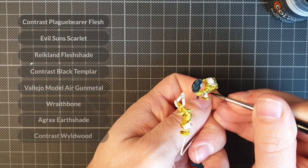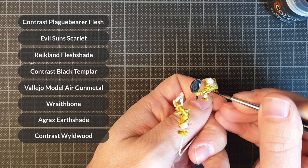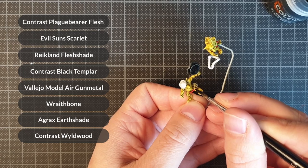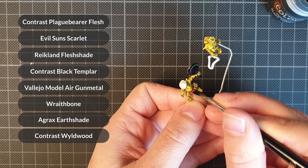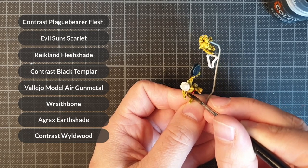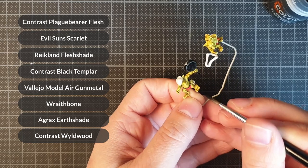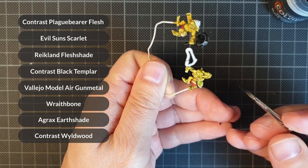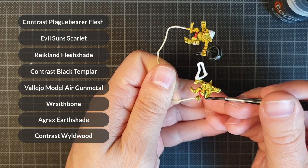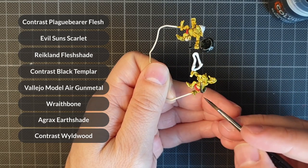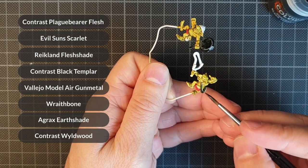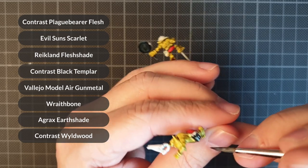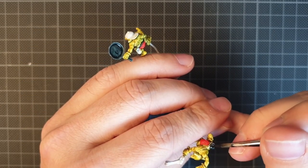I painted the skin with two coats of Plague Bearer Flesh Contrast Paint. For the red parts, I used Evil Sun Scarlet with a wash of Reikland Fleshshade. Contrast Black Templar for the black parts and metal parts, which later had a coat of Vallejo Model Air Gunmetal. All the white parts were painted in Wraithbone and given a wash of Agrax Earthshade, and then cleaned up with more Wraithbone. The wood was painted using Contrast Wyldwood. That's it for the minis, let's get started on the diorama.